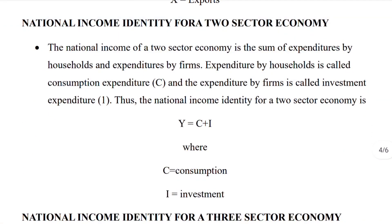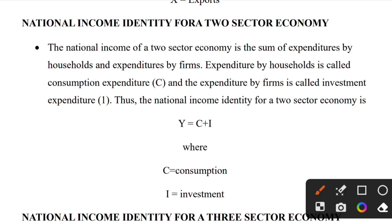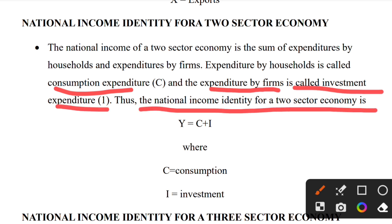National income identity for a two-sector economy: national income is the sum of expenditure by households and expenditure by firms. Expenditure by households is called consumption expenditure (C), and expenditure by firms is investment expenditure (I). Thus, the national income identity for a two-sector economy is: Y = C + I.